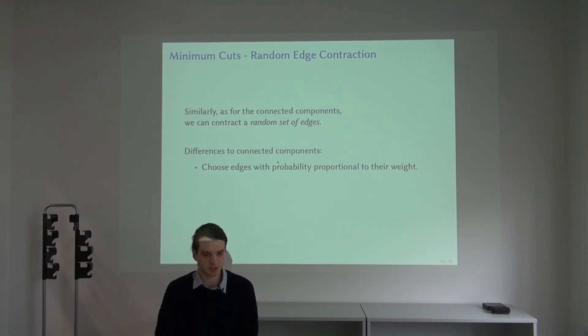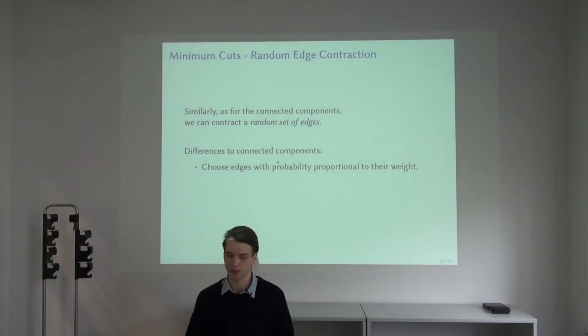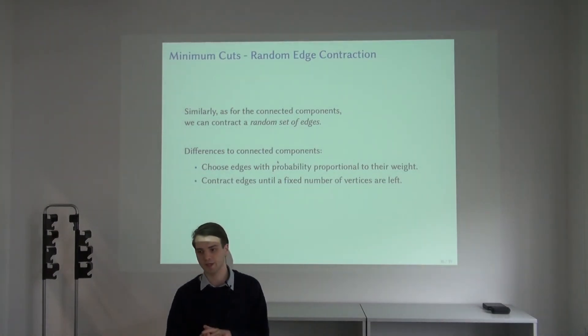It's a minimum cut, so it has a small weight compared to the overall weight. This is one of the differences in the connected components case, where we just contract edges uniformly at random, but it's just a generalization because you can think of a weighted edge as just a set of parallel unweighted edges.